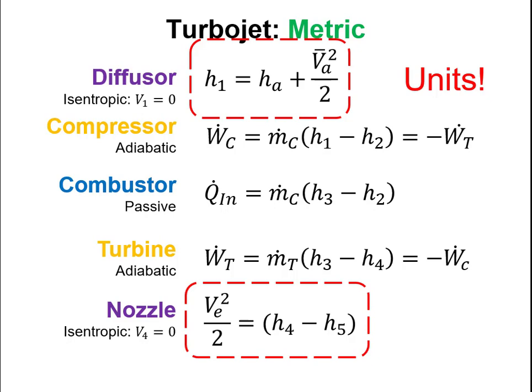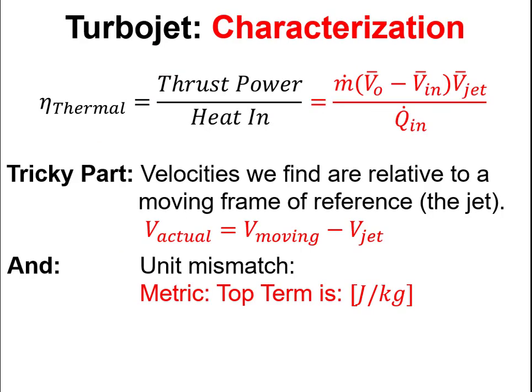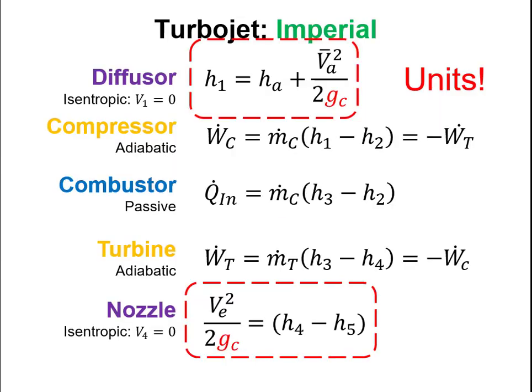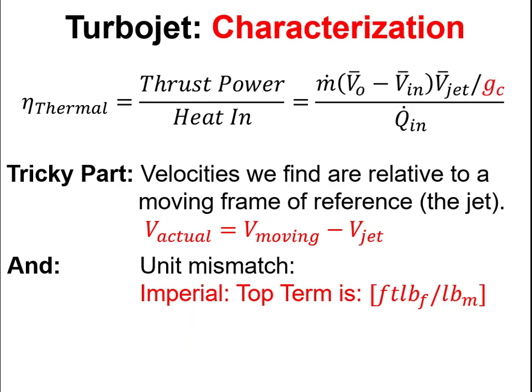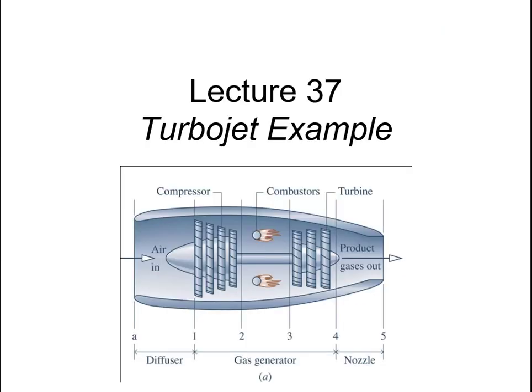A tricky aspect of turbojet analysis is units: the kinetic energy term in the numerator is in joules per kilogram, while Q_dot is typically in kilojoules per kilogram, so watch your units. In the imperial system this is even more difficult — when taking kinetic energy terms you must remember to divide by g_c, which equals 32.2.